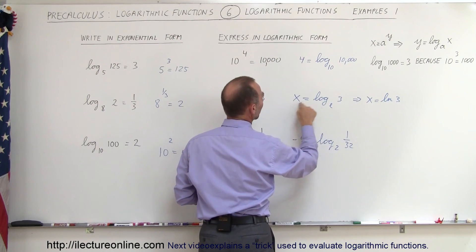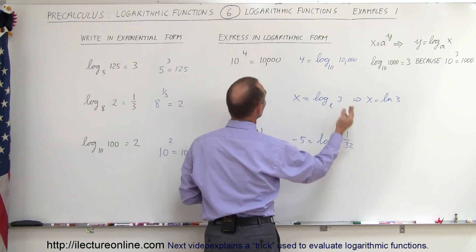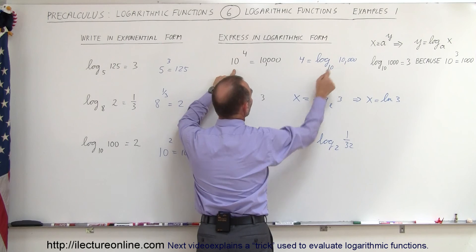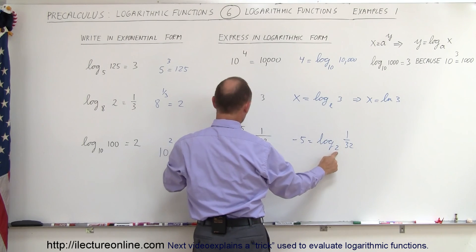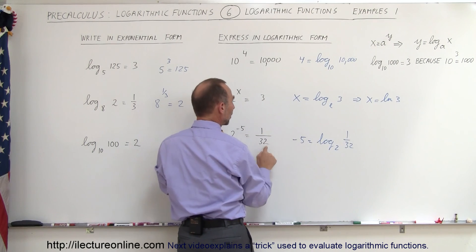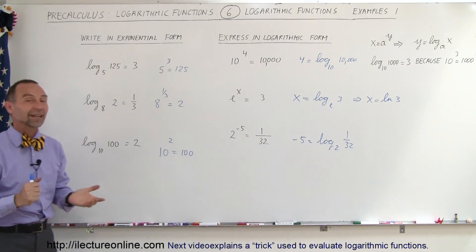Take the base, raise it to this number, we get that. Take the base, raise it to this number, we get that. So let's check it. The base raised to the fourth power gives me 10,000. The base raised to x gives me 3. The base raised to the minus fifth power gives me 1 over 32. And that's how you check to make sure you did it correctly.